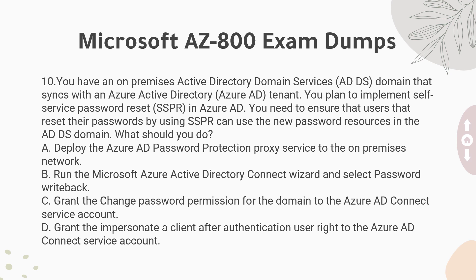Question 10: You have an on-premises Active Directory Domain Services (ADDS) domain that syncs with an Azure Active Directory (Azure AD) tenant. You plan to implement self-service password reset (SSPR) in Azure AD. You need to ensure that users that reset their passwords by using SSPR can use the new password for resources in the ADDS domain. What should you do? A. Deploy the Azure AD password protection proxy service to the on-premises network. B. Run the Microsoft Azure Active Directory Connect Wizard and select password write-back. C. Grant the change password permission for the domain to the Azure AD Connect service account. D. Grant the impersonate a client after authentication user right to the Azure AD Connect service account.